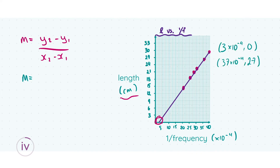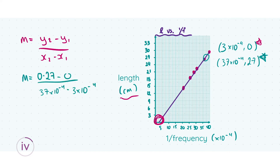I've identified two points on the line: one where the line intercepts the axis and one further up the line. An important note: the Y values are in centimeters and must be converted to meters. Plugging into the slope formula gives a value for M of approximately 79.4. You might get something closer to 80 or 85 — that's fine, as your answer depends on how you drew your graph.